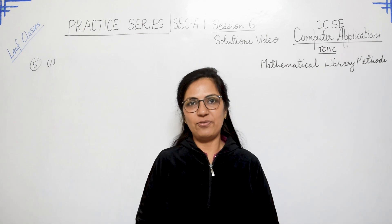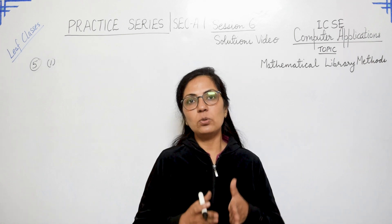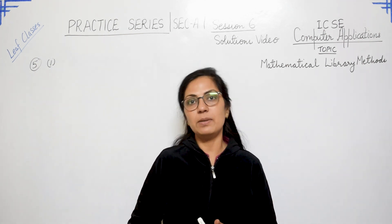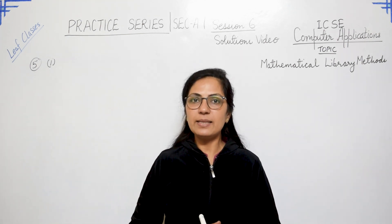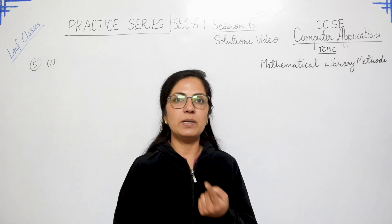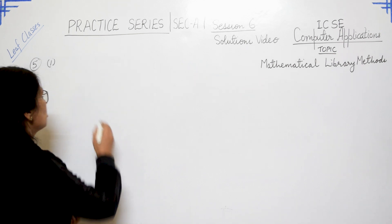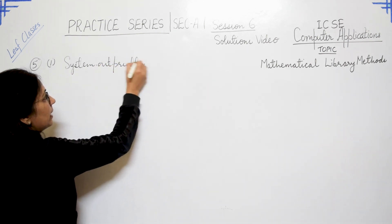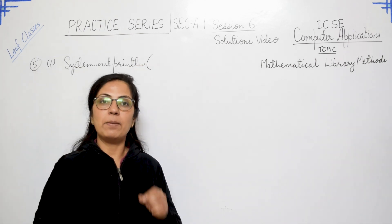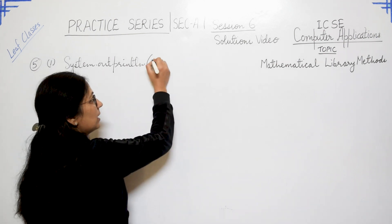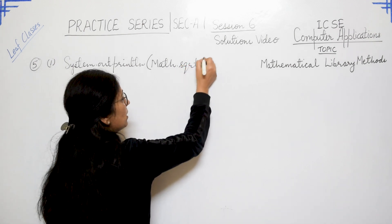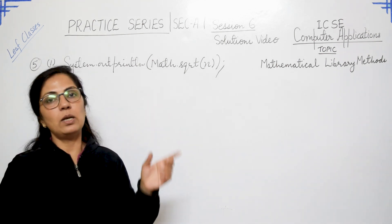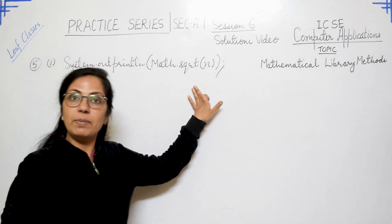Question number 5 asks to write the syntax for the following. Try to minimize the number of statements — if possible, write just one statement. Part one: to display the square root of number N. Display means use a print statement. So write: System.out.println(Math.sqrt(N)). Both print and println are correct. Don't separately input the number, then find the square root, then display — just write it in one statement if possible.